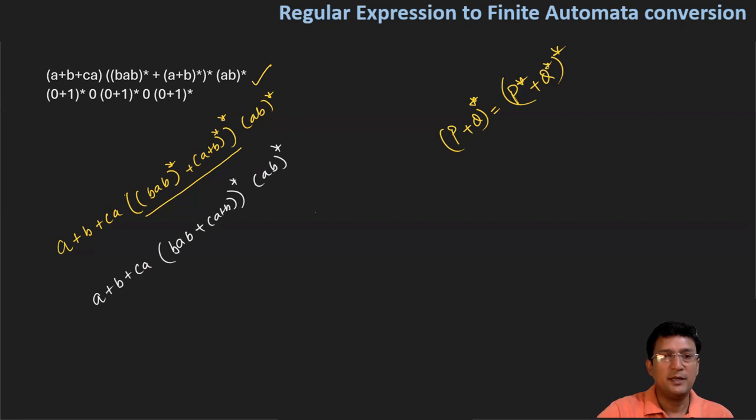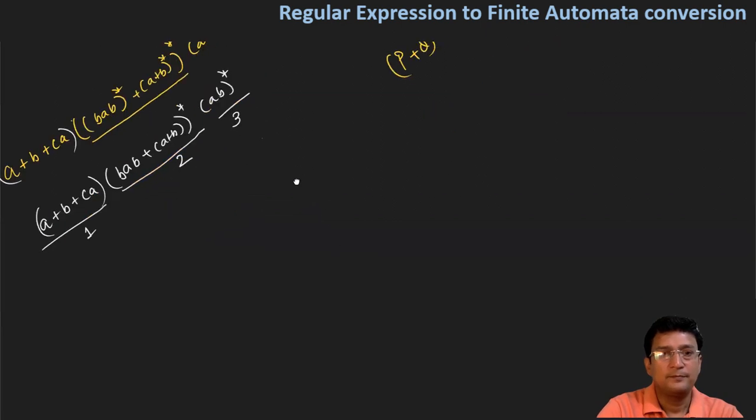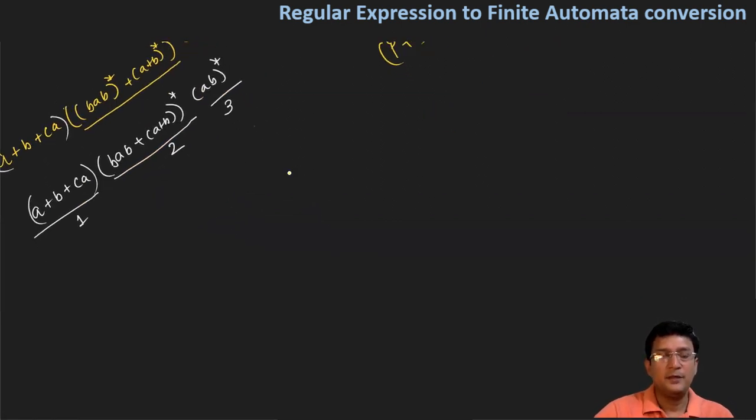We will apply concatenation to these components. We have an initial state, and the expression is (a+b+c) then (bab+a+b)* and then (ab)*. This takes us from initial state to final state.